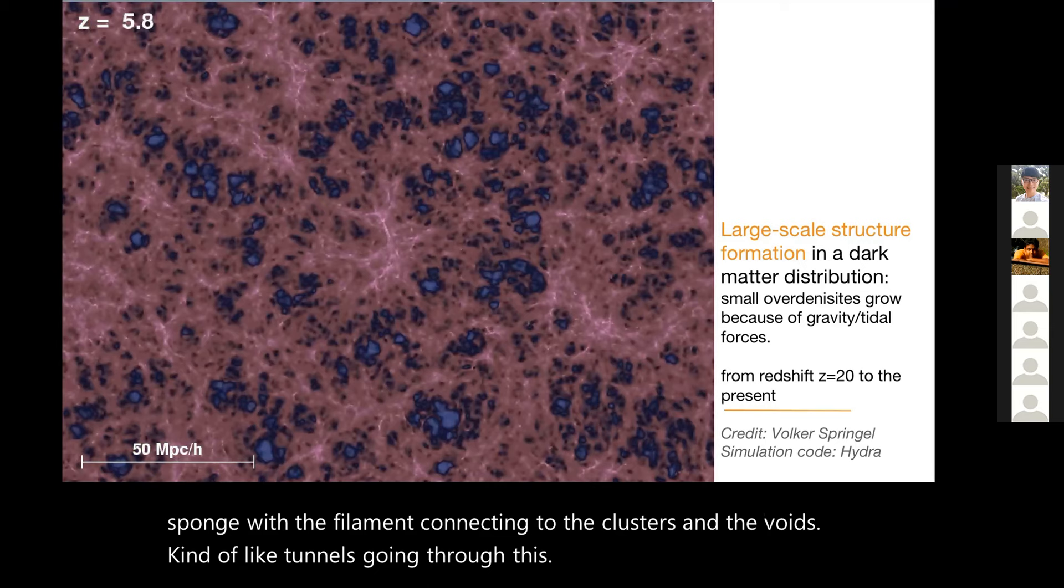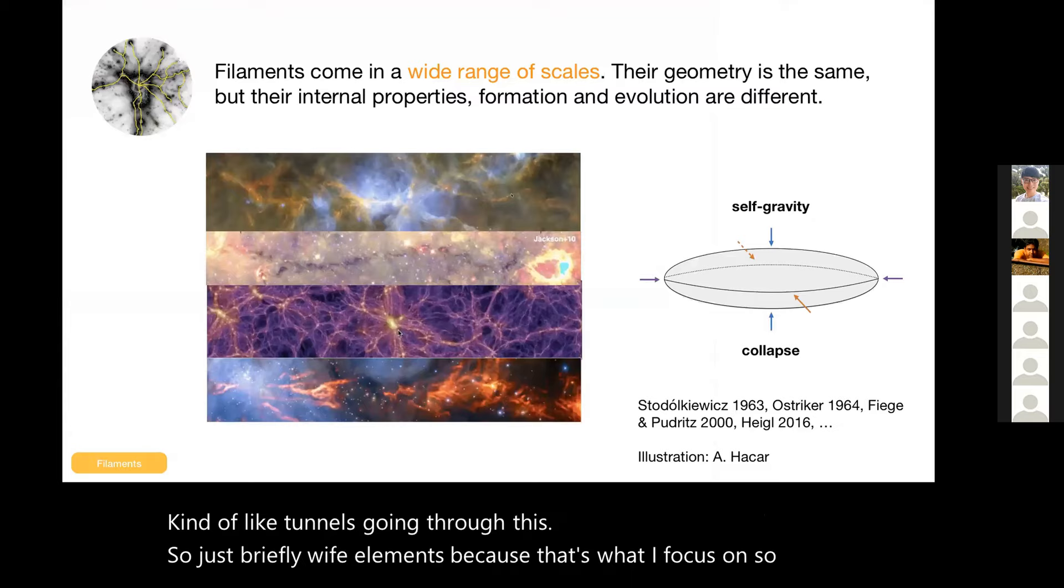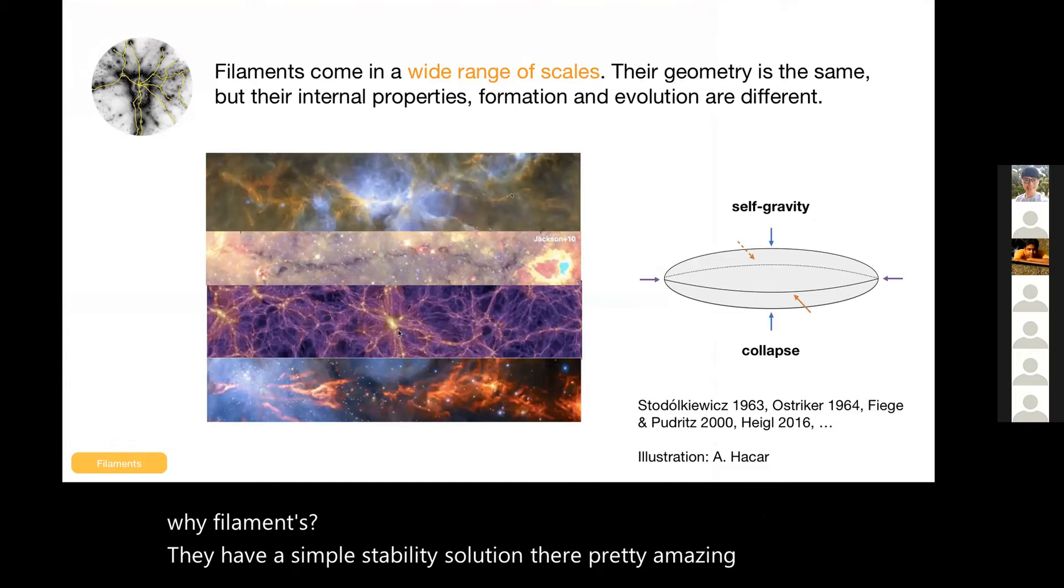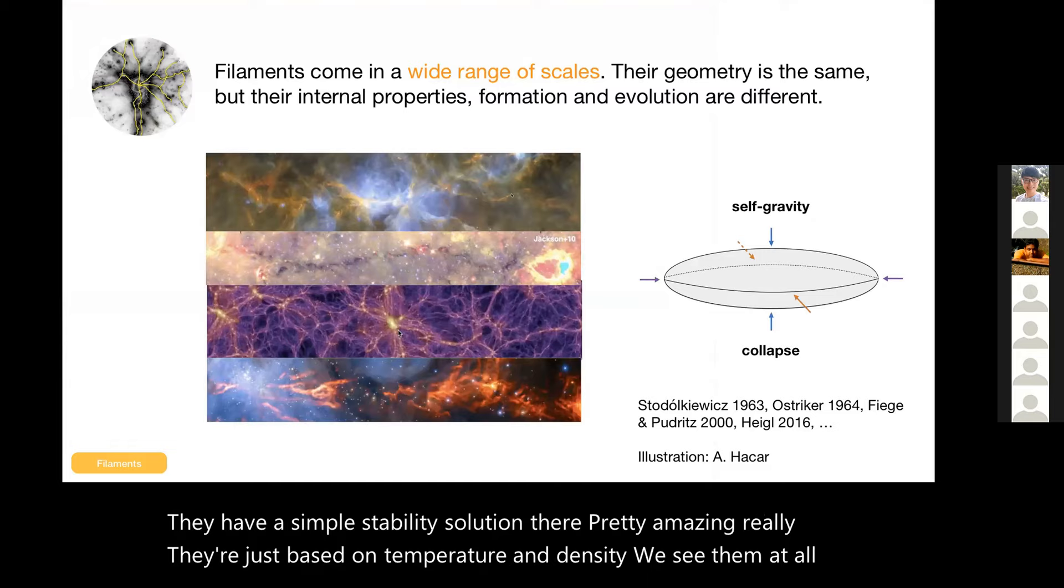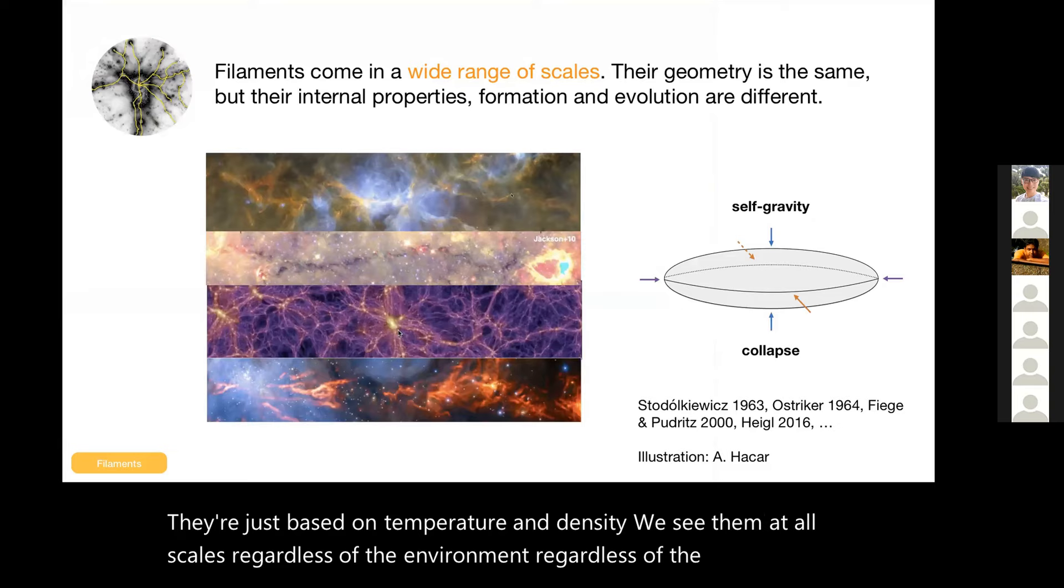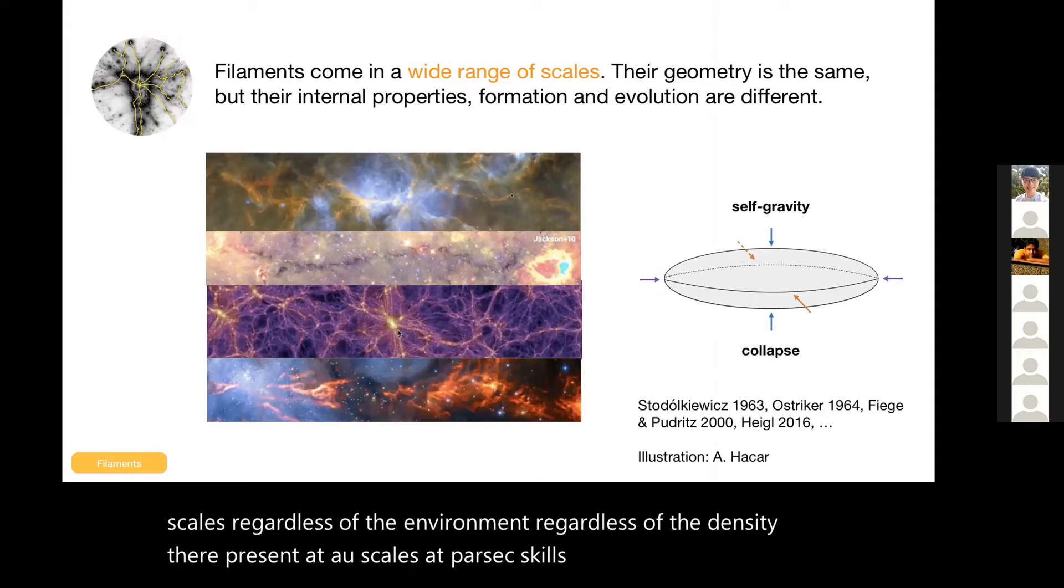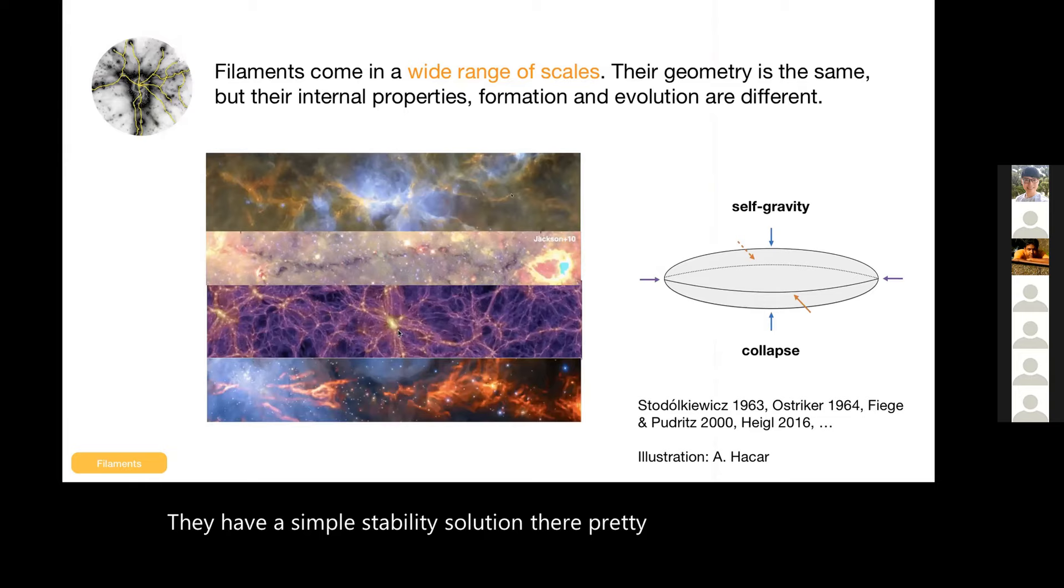So just briefly, why filaments? Because that's what I focus on. They have a simple stability solution - they're pretty amazing really. They're just based on temperature and density. We see them at all scales, regardless of the environment, regardless of the density. They're present at AU scales, at parsec scales, in molecular clouds where they fragment to form stars, and these cosmological large filaments that you and I know. The appearance is very similar anywhere and everywhere, and this is just because the conditions and mechanisms operating everywhere are intrinsically anisotropic. Any process that reduces dimensions will lead to filaments.